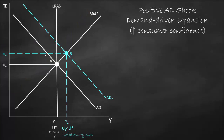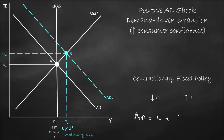Now let's assume the same situation — a positive aggregate demand shock — but the government decides to use a contractionary fiscal policy. Using contractionary fiscal policy means we decrease government spending or increase taxes. If G goes down, aggregate demand goes down. If taxes increase, consumption will be lower, so aggregate demand will be lower. If we increase taxes on businesses, investment will be lower, so aggregate demand will be lower. Aggregate demand shifts to the left, returning us to our original equilibrium at point A — our original potential output at the natural rate of unemployment and inflation level 1.